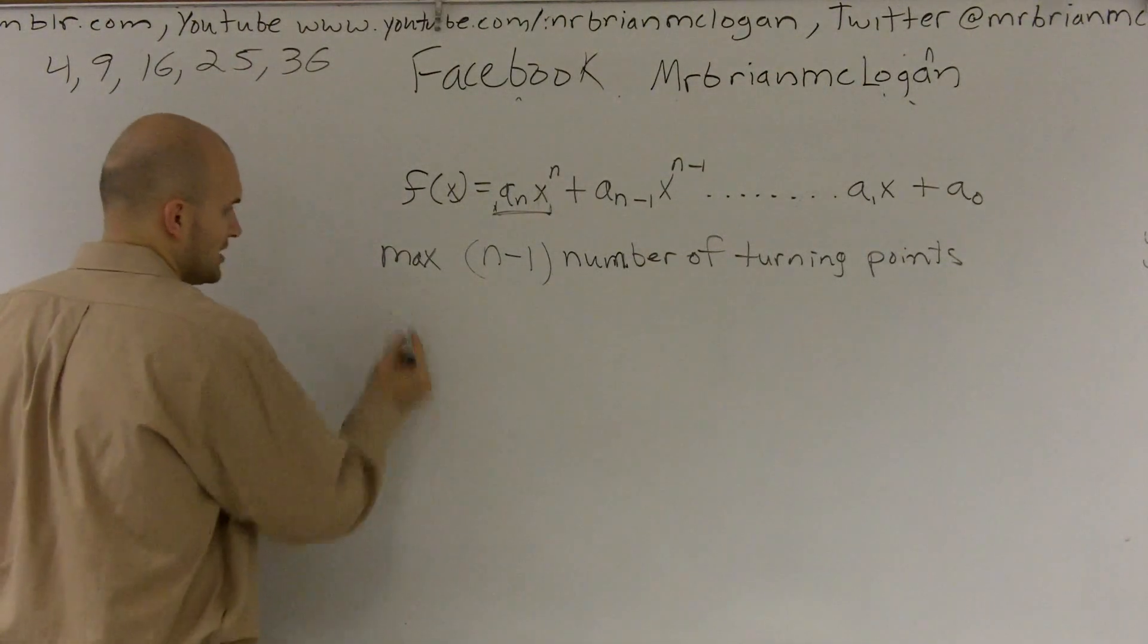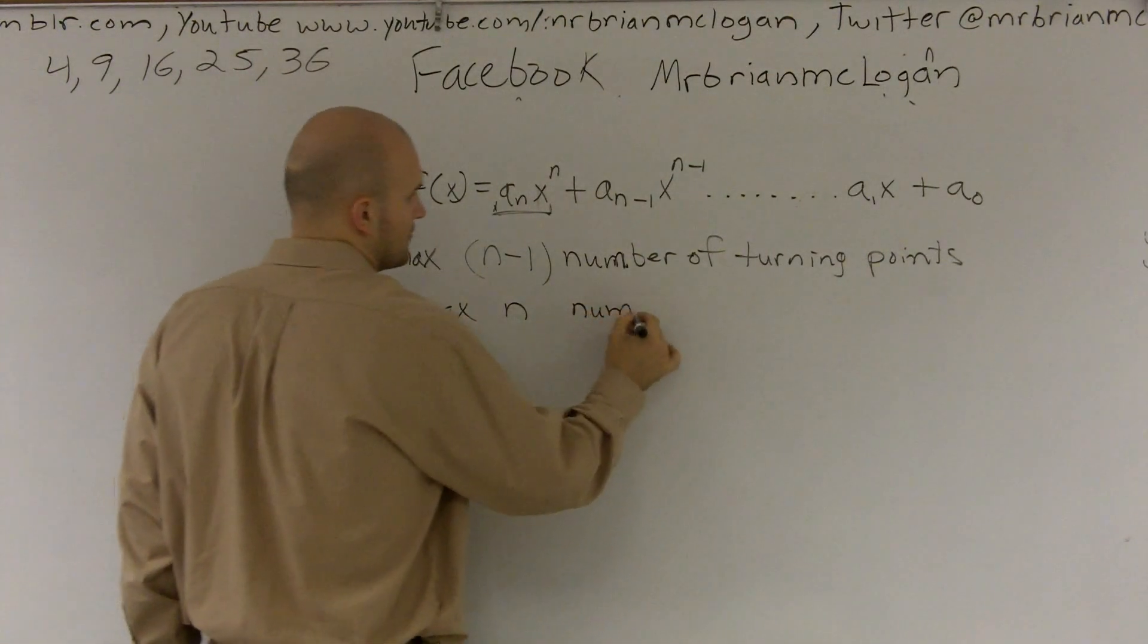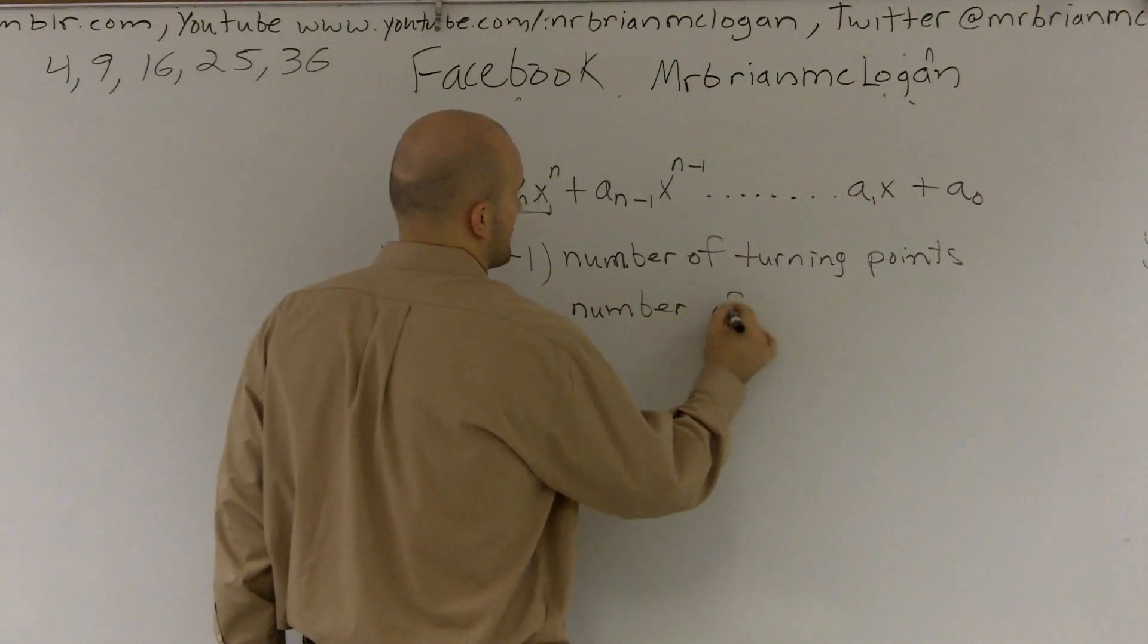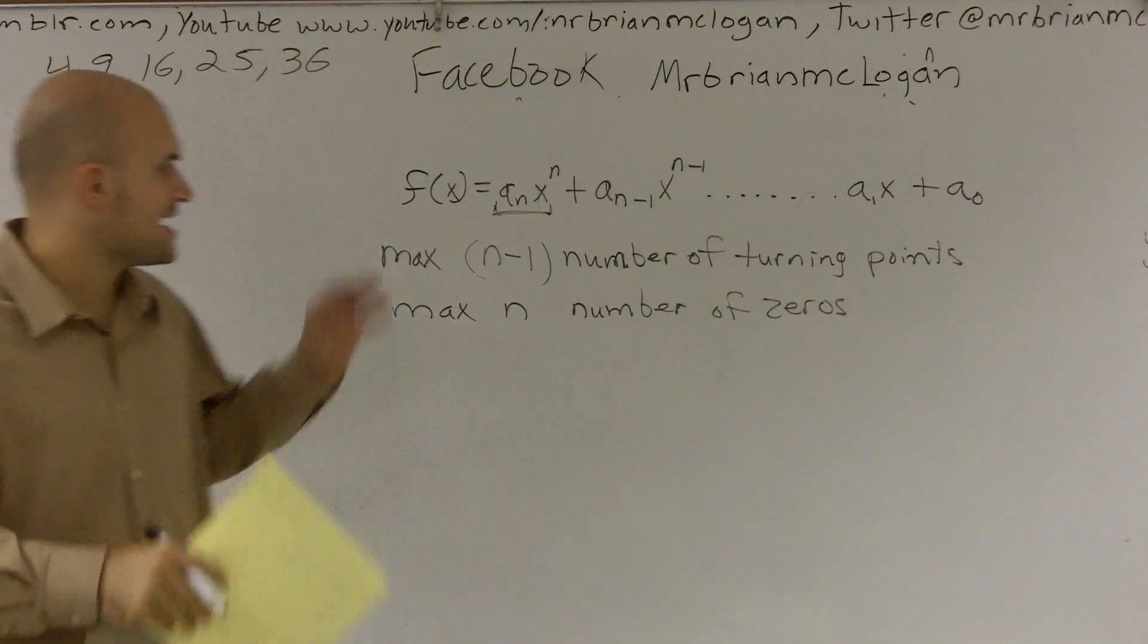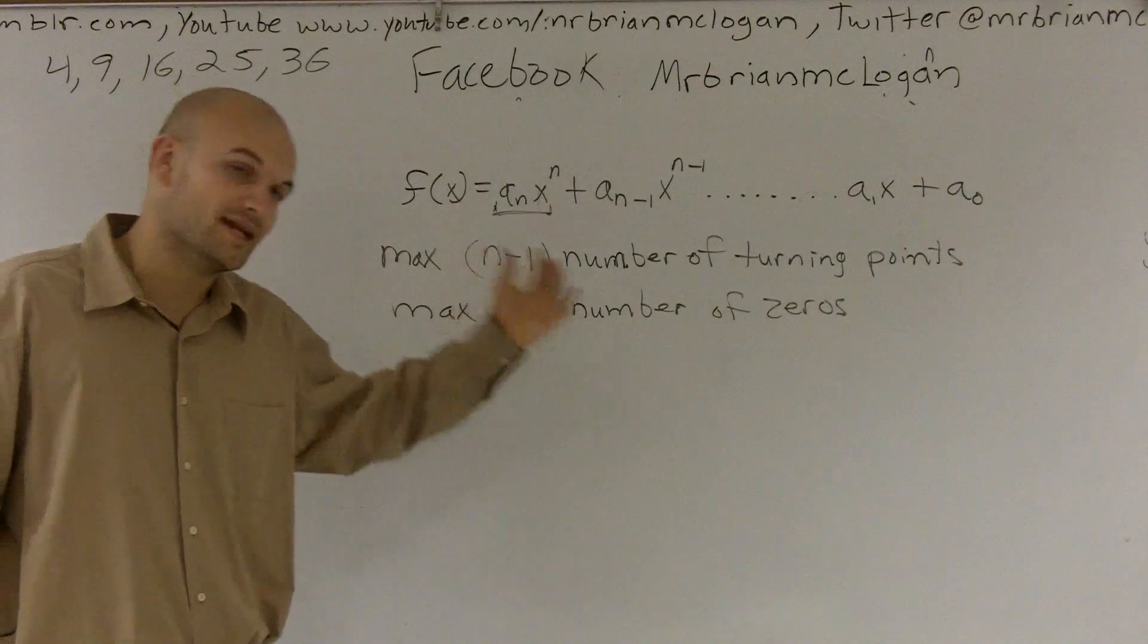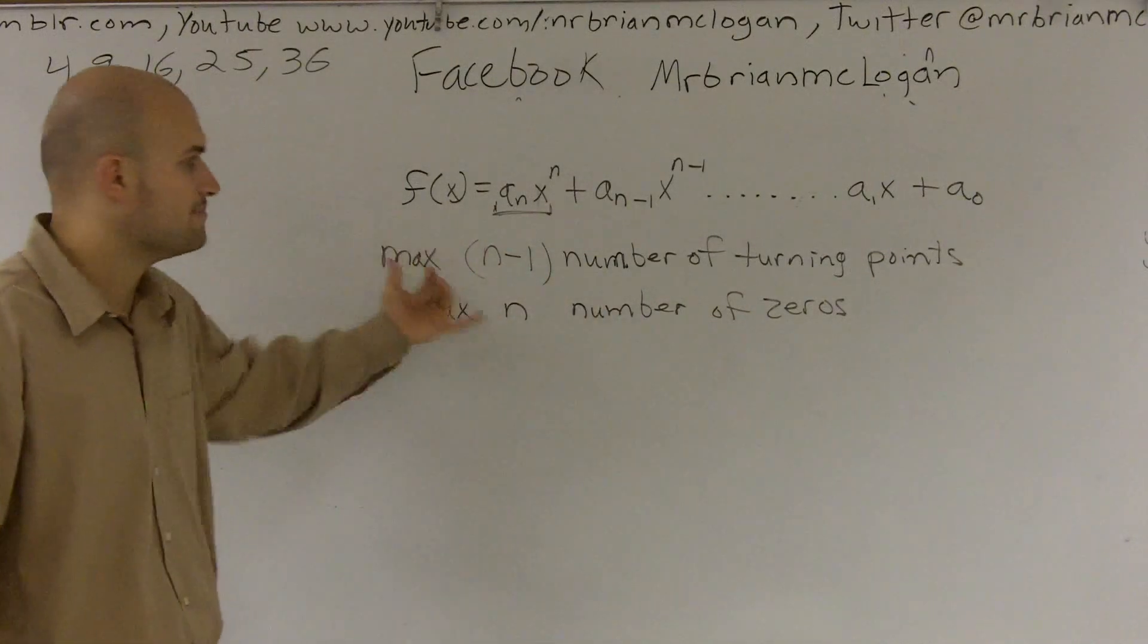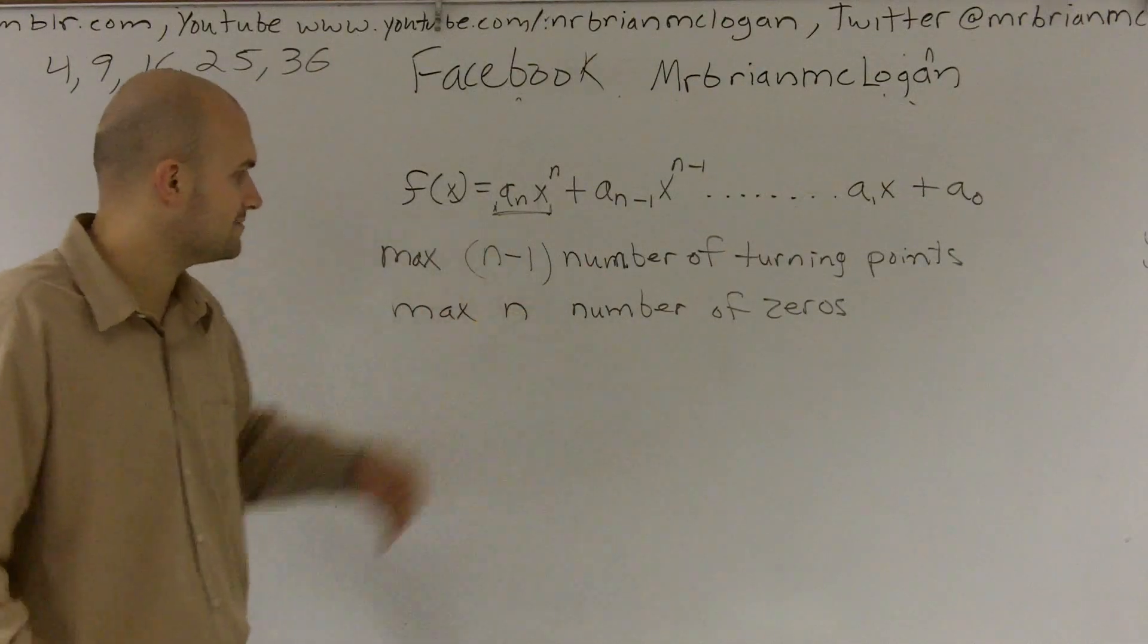Then the next thing is the other max. Max number of zeros. So, therefore, the maximum number of zeros that this graph could have is at most n. It can have less. All right? But the maximum number it's going to be able to have, or it could have the same, but the maximum number it could have is n.